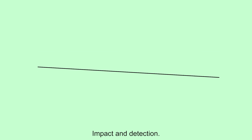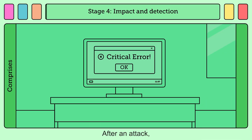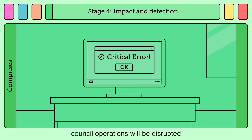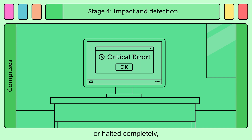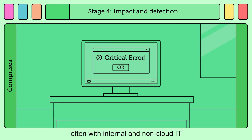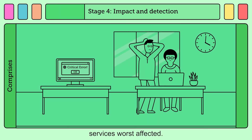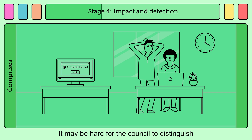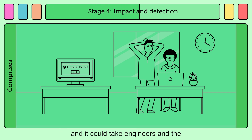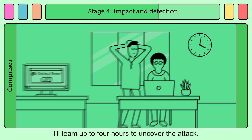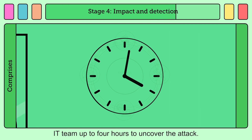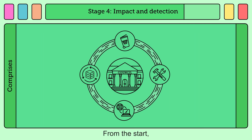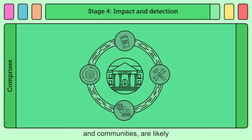Impact and Detection. After an attack, Council operations will be disrupted or halted completely, often with internal and non-cloud IT services worst affected. It may be hard for the Council to distinguish the cause of the service outage, and it could take engineers and the IT team up to four hours to uncover the attack. From the start, staff, residents and communities are likely to be affected by disruption to services.